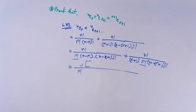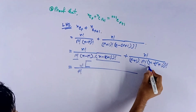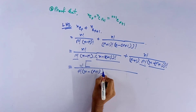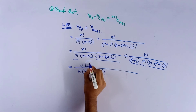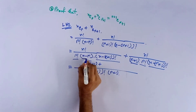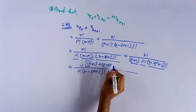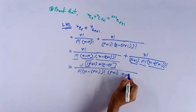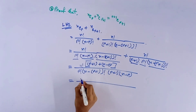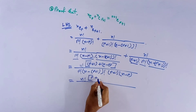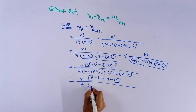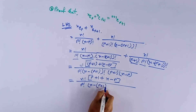In the numerator we have n factorial. In the denominator, r factorial is common so we write r factorial, and (n minus r plus 1) whole factorial is common so we write that. The second term has (r plus 1), and in the numerator we get (r plus 1) plus (n minus r), giving us n factorial times (r plus 1 minus r plus n).